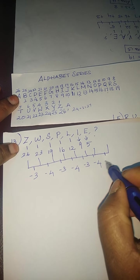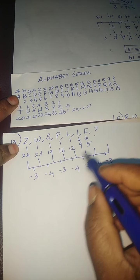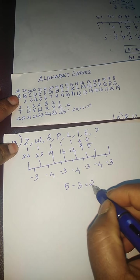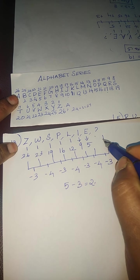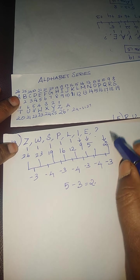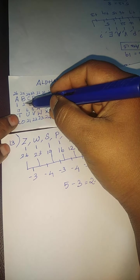Yes, difference should be minus 3. 5 minus 3 is 2. Here, the number should be 2. What is the number 2 denotes here? It is B.